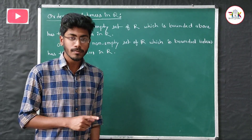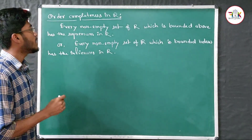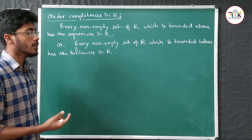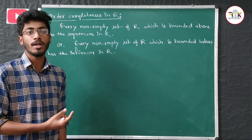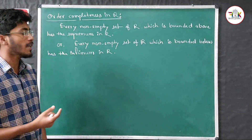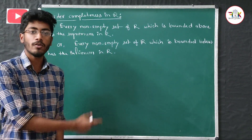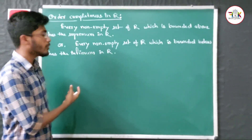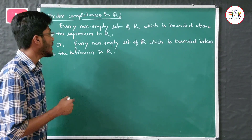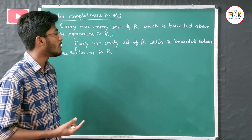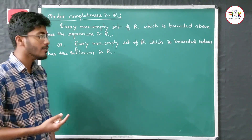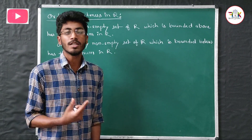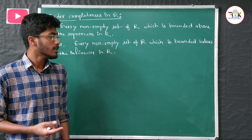That means every non-empty subset of real numbers, if it is bounded above, then it will have a supremum that belongs to the set of real numbers. Similarly, for infimum: every non-empty set of R which is bounded below has the infimum in R. So if it is bounded below, then it will have an infimum in real numbers.